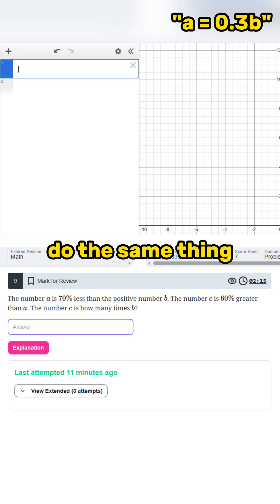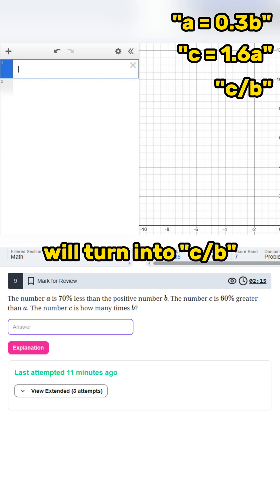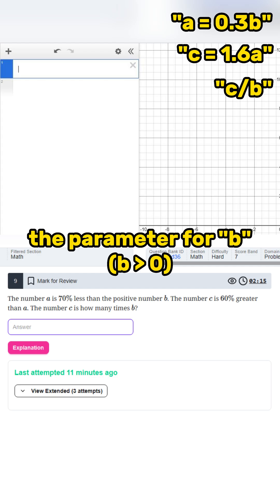And we're going to do the same thing for the other statements in this question. So C will turn into 1.6A, and the question, the number C is how many times B, will turn into C divided by B. And the last piece of information that the question gives us is the parameter for B.